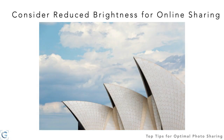Another issue related to display calibration: if you calibrate your display so it's not too bright, your images look a little darker on your calibrated display. But most people viewing your images online will have uncalibrated, too-bright displays, meaning your images can look too bright to them. The human eye adjusts for this, so it's not usually a major issue, but it's not a crazy idea to reduce the brightness of images you're going to share online by as much as a half a stop — though not much more than that.